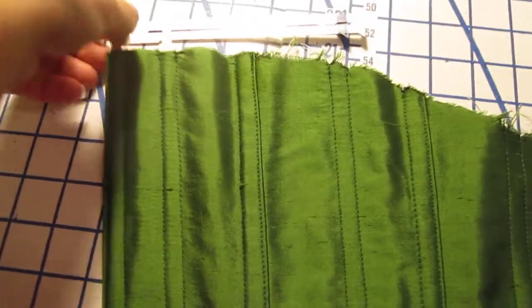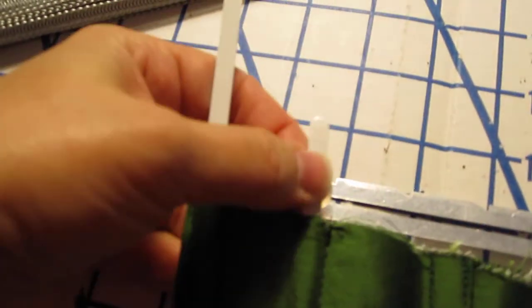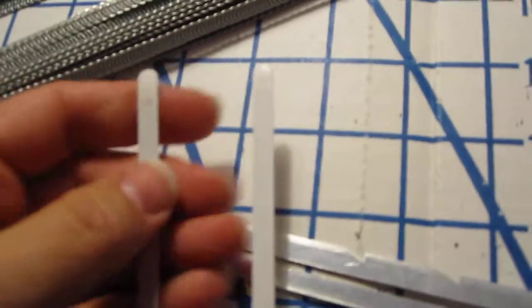I'm using two different kinds of boning in this. The back, where the grommets will be, you really need to use the spring steel, this white coated.